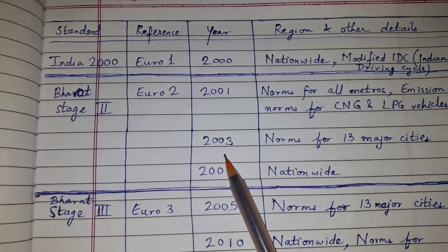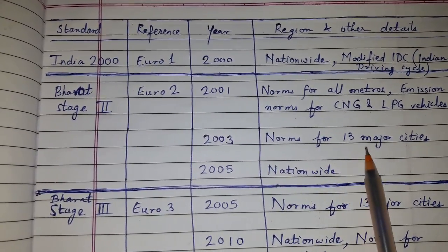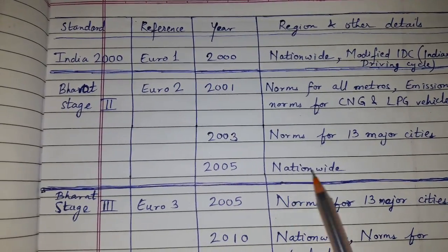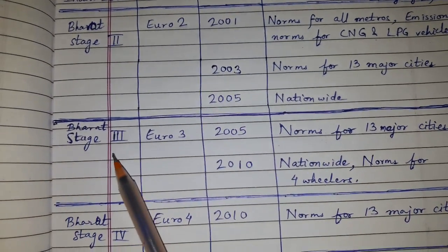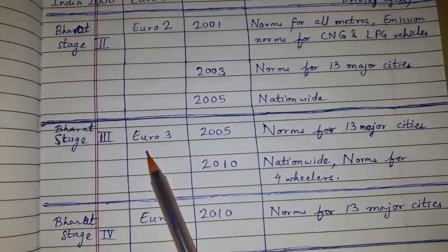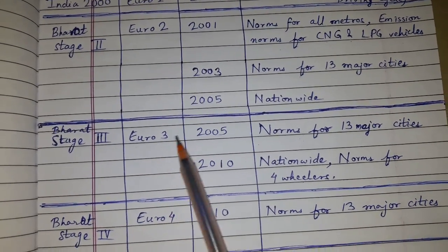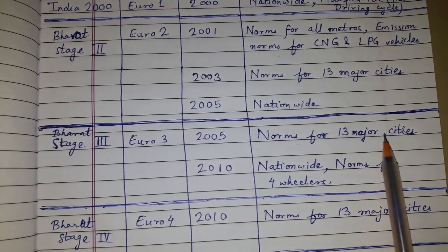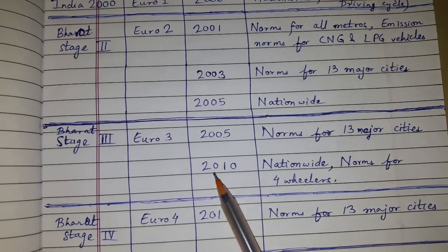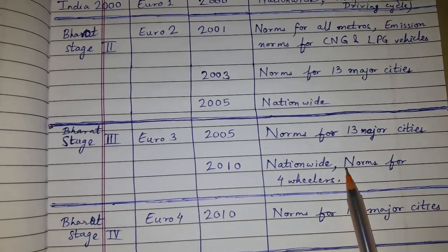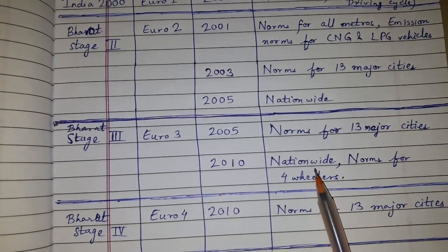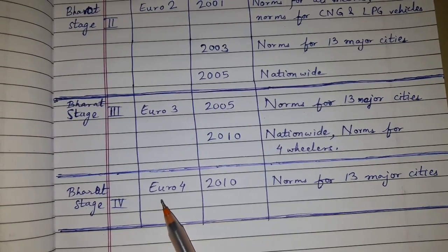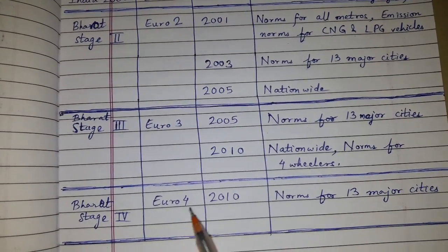Bharat Stage 2 was extended to 13 major cities in 2003 and applied nationwide in 2005. Bharat Stage 3, equivalent to Euro 3, was introduced in 2005 for 13 major cities and became nationwide for four-wheelers in 2010. Bharat Stage 4, equivalent to Euro 4, followed as the next reference standard.